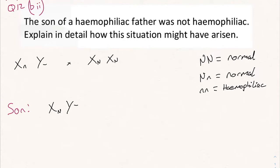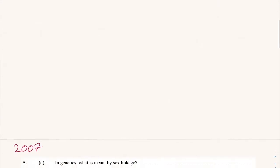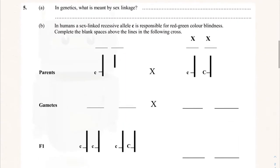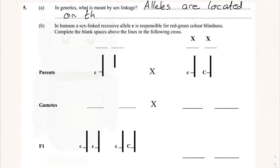That question is answered. For sex linkage it's mostly just knowing X's and Y's and knowing what can go on what. Hemophilia is one example and red-green color blindness is another. Moving to 2007 question five: in genetics, what is meant by sex linkage? All you have to say is that the alleles are located on the X chromosome — and that's it, done.